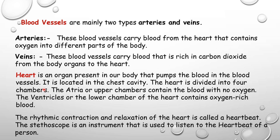We already studied the mechanism of the heart in detail. You can read that part or watch that video — here we are just revising the main points. The rhythmic contraction and relaxation of the heart is called a heartbeat. The stethoscope — spelled S-T-E-T-H-O-S-C-O-P-E — is an instrument used to listen to the heartbeat of a person.